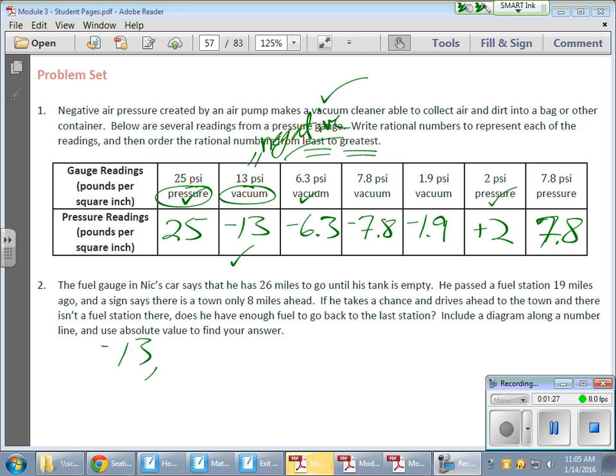Then comes my negative 7.8. As I travel to the right, I'll probably hit that negative 6.3, so I'm done with that one. Any other negative values out there? Yes, my negative 1.9.